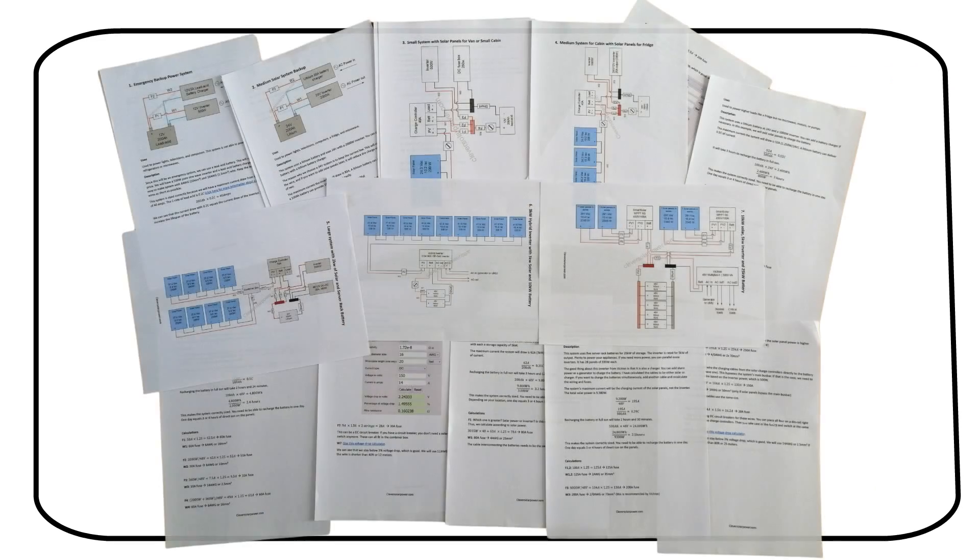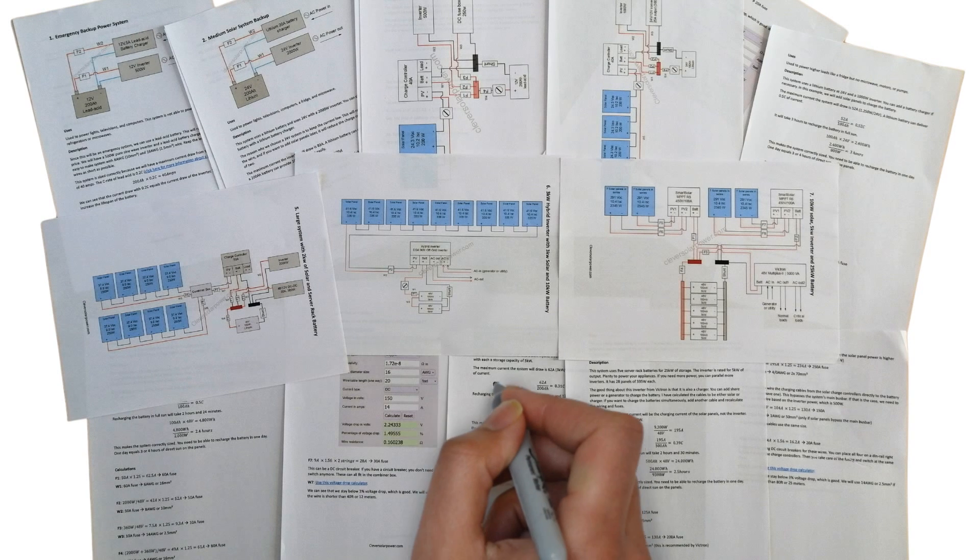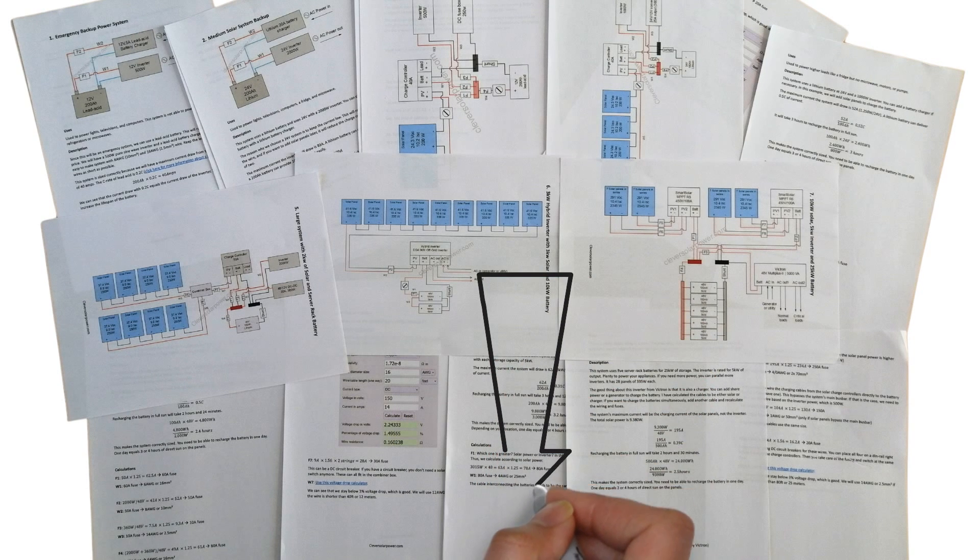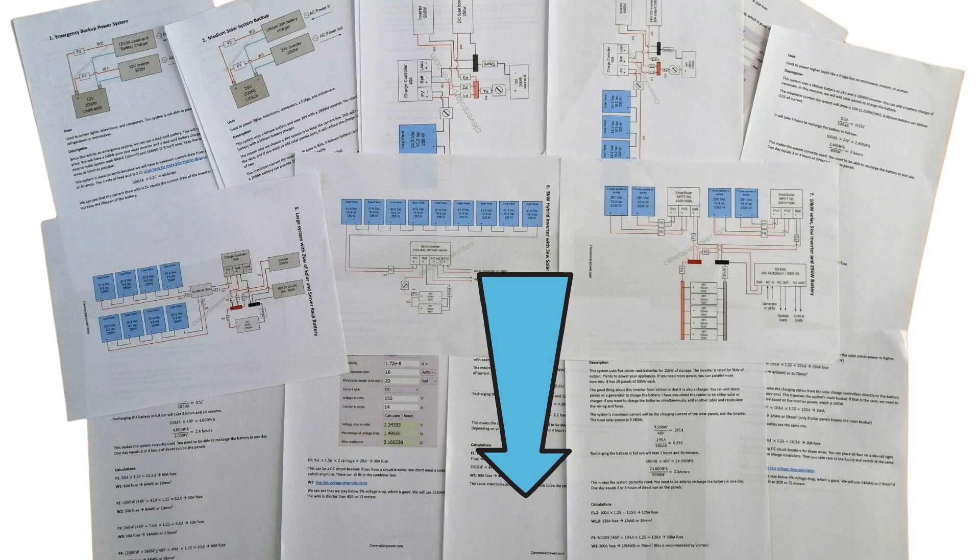If you want extra help sizing your solar system, you can get free diagrams about off-grid solar power through the link in the description. It has wire and fuse sizes, from small backup power systems to larger whole house systems. Check the first link in the description for more information.